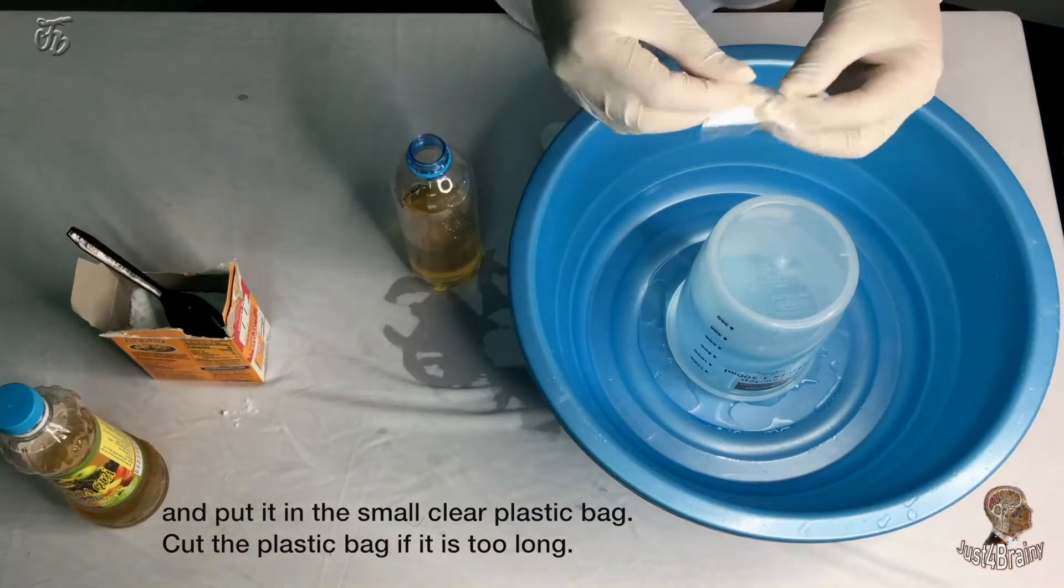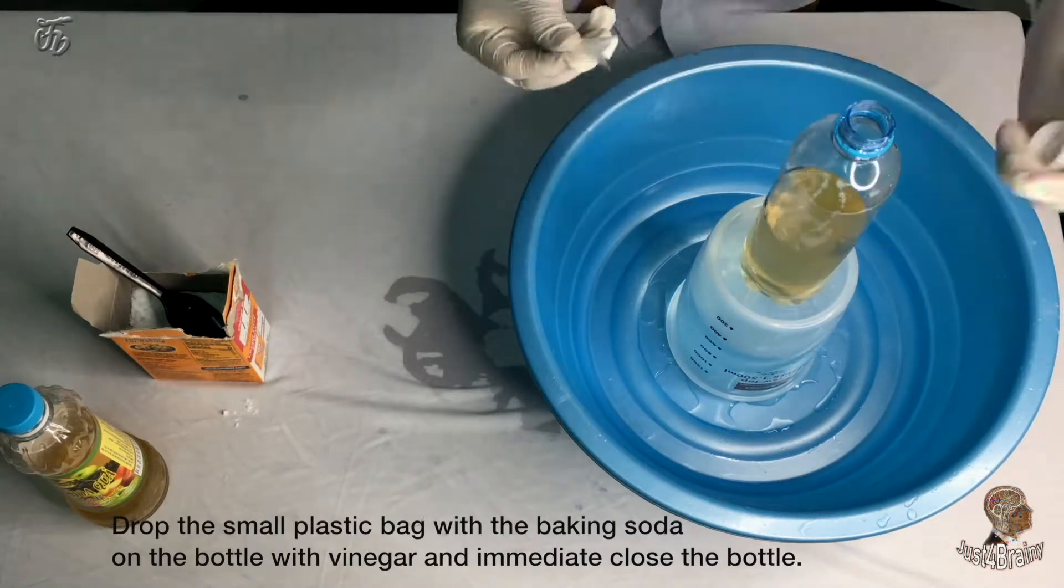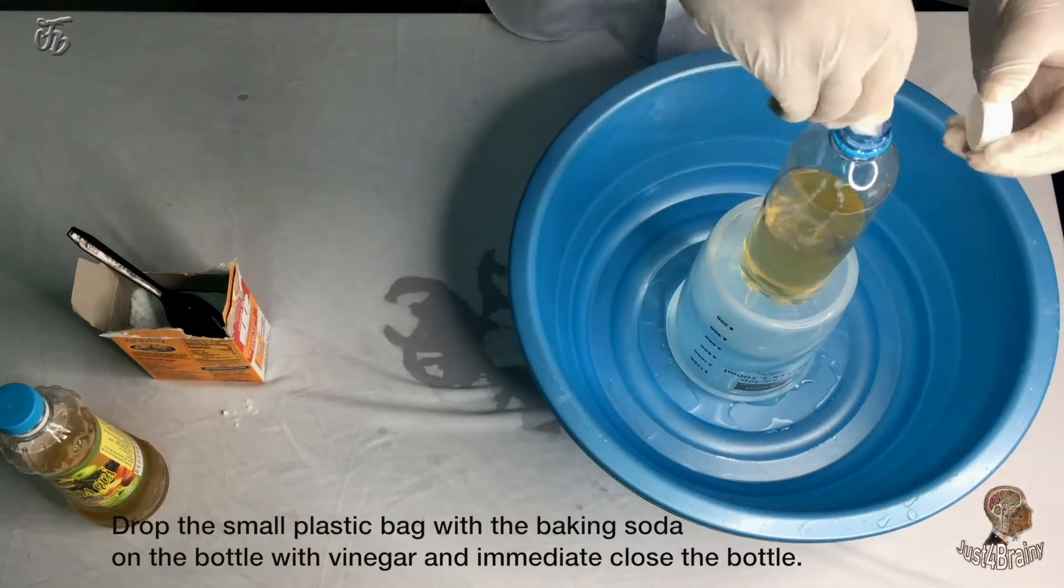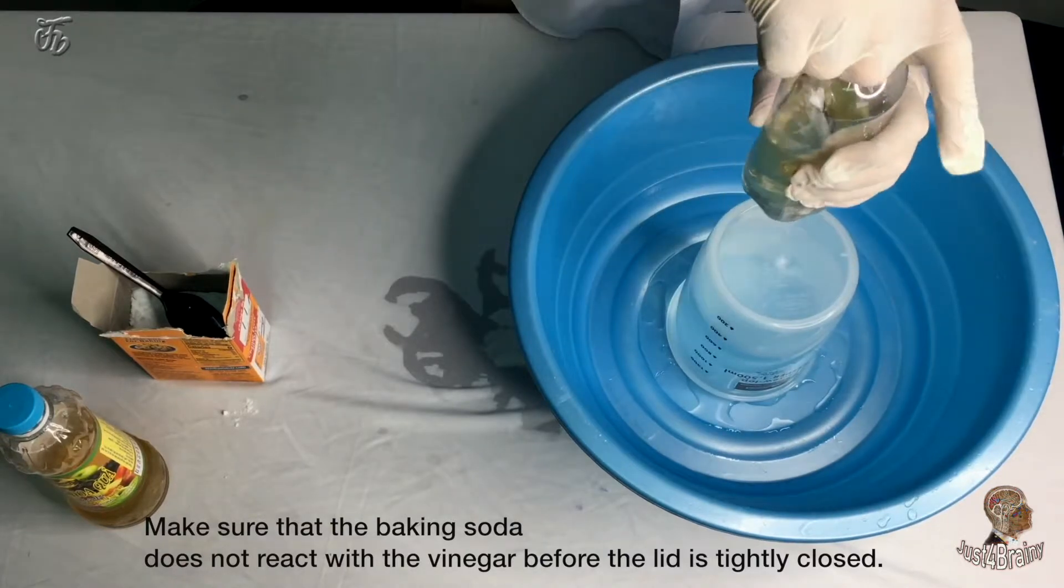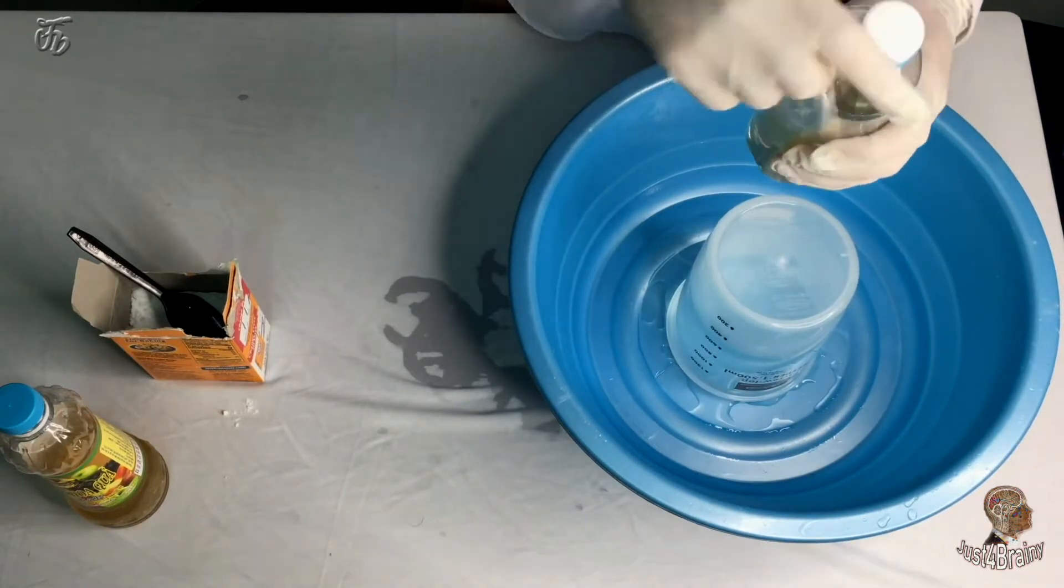Cut the plastic bag if it's too long. Drop the small plastic bag with the baking soda in the bottle with vinegar and immediately close the bottle. Make sure that the baking soda does not react with the vinegar before the lid is tightly closed.